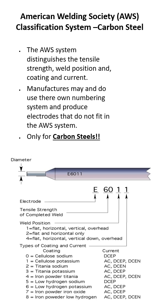The next two numbers tell us the tensile strength — how much force it's going to take to pull this thing apart if we had one square inch of it. So this one is 60, as in 60,000 pounds of force is what it's going to take per square inch to get pulled apart.